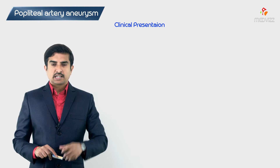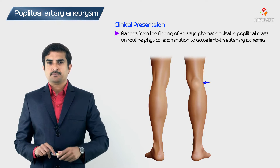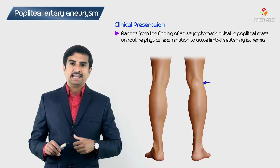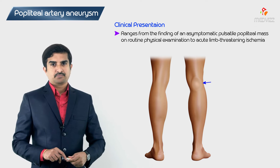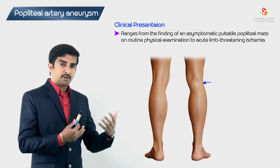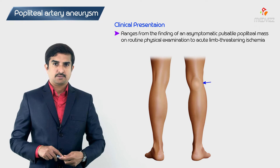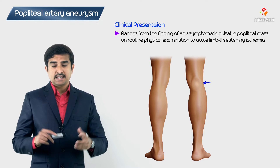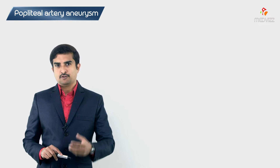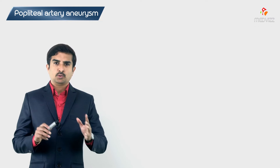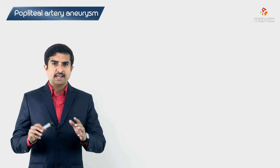The clinical presentation of a symptomatic popliteal artery aneurysm ranges from an asymptomatic pulsatile popliteal mass to acute limb-threatening ischemia. In the vast majority of cases, symptoms range from completely asymptomatic to fully symptomatic presentations.